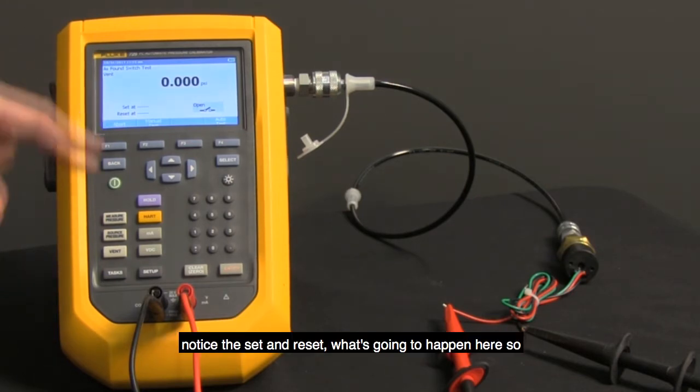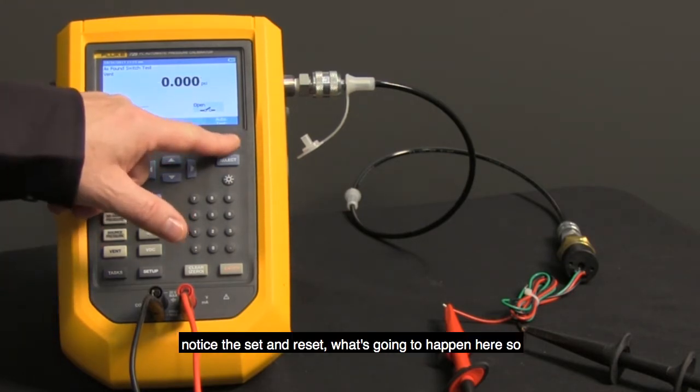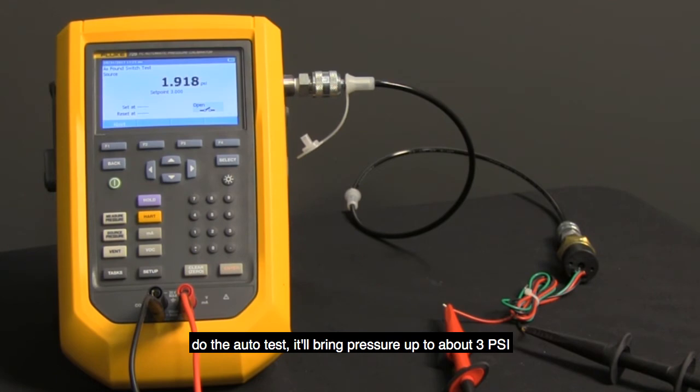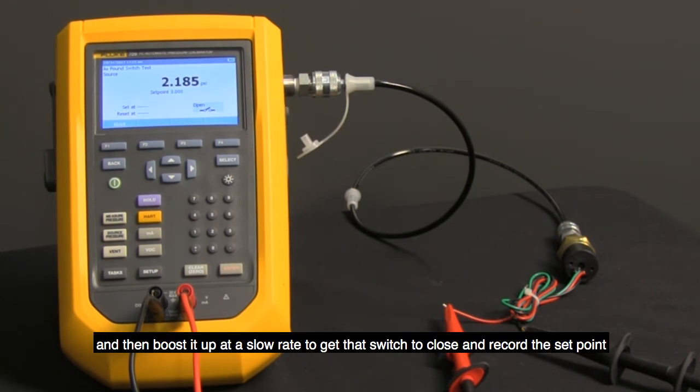Notice the set and reset, what's going to happen here. So do the auto test. It'll bring pressure up to about 3 psi, and then boost it up and add a slow rate to get that switch to close and record the set point.